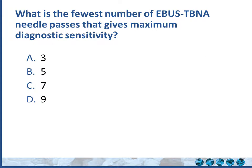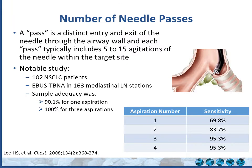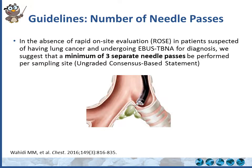What is the fewest number of EBUS-TBNA needle passes that gives maximum diagnostic sensitivity for lung cancer? Most of you got it right — it's three. A study from South Korea showed sensitivity increased after one, two, and three passes, but plateaued after three. So when doing EBUS-TBNA to establish a diagnosis, you do three passes. A pass means a distinct entry and exit of the needle — not the five to ten agitations you do within each needle entry. The guideline recommends a minimum of three separate needle passes per sampling site.